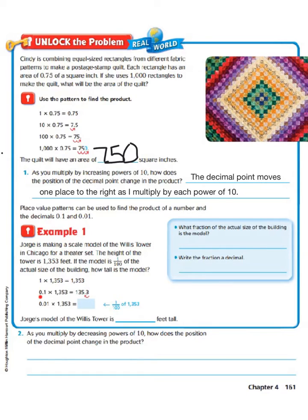If we break it down even more, we know that 1 tenth times 1,353 equals — well, we know that we have one place value to the right of the decimal, so we're going to have to move the decimal point one place to the left because we're taking one tenth. Now let's go to one hundredth times 1,353. We have two place values to the right of the decimal, so our answer is going to be two place values over. So we know our answer is going to be 13.53.